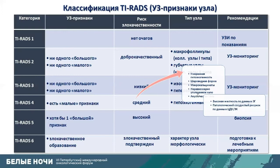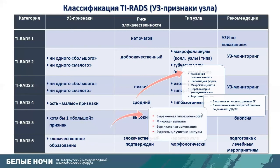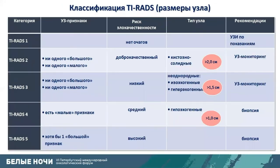Minor features listed include: moderate hypoechogenicity, round shape, microcalcifications, irregular halo thickness, high rigidity on elastography, and pathological vascular pattern. Together, these grade the node into TIRADS 4. Major features include: clear hypoechogenicity, microcalcifications, vertical orientation, spiculated contours, and radiating outlines. Having at least one major feature classifies the node into TIRADS 5. Node size is also now considered in the classification.